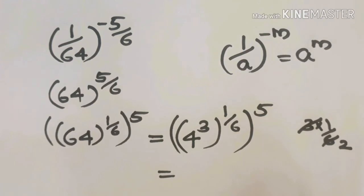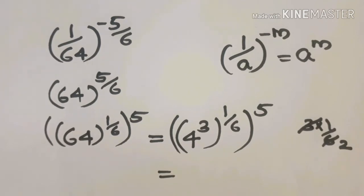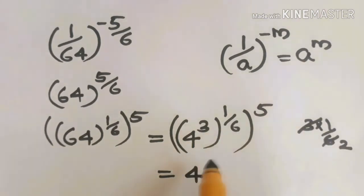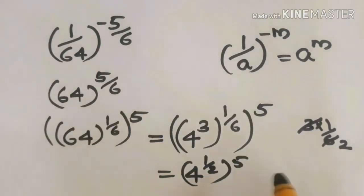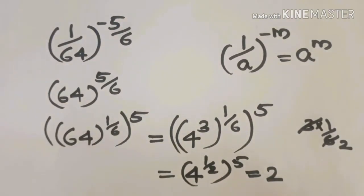This simplifies to 2 raised to 1 by 6, all raised to 5, giving 4 raised to 1 by 2, which equals 2. Then 4 raise to 1 by 2 into 2, all raised to 5, gives us 4 raise to 1 by 2 equals 2, and 2 raised to 5 equals 32. The answer is 32.